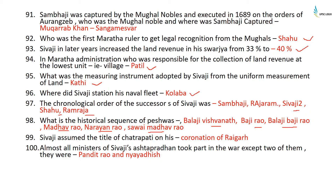The chronological order of successors of Shivaji was: Sambhaji, Raja Ram, Shivaji II, Shahu, and Ram Raja. The historical sequence of Peshwas was: Balaji Vishwanath, Baji Rao I, Balaji Baji Rao, Madhav Rao, Narayan Rao, and Sawai Madhav Rao. Shivaji assumed the title of Chhatrapati on his coronation at Raigarh. Almost all ministers of Shivaji's Ashta Pradhan took part in war except two: Pandit Rao and Nyayadhish.